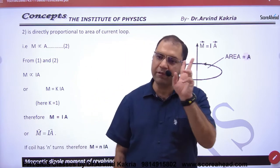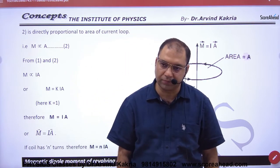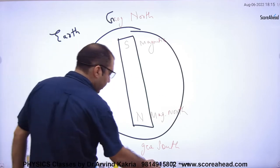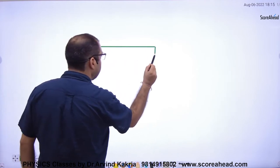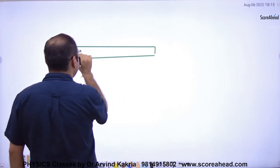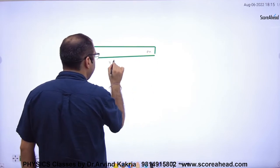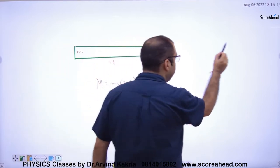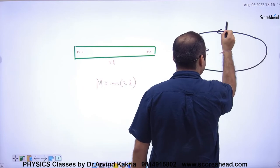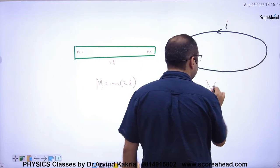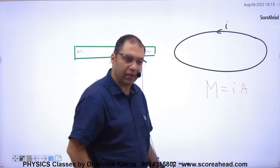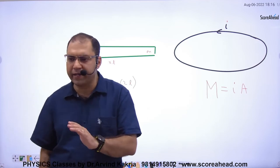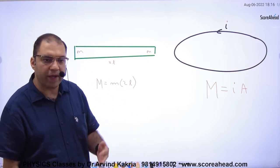There are two types of problems. Either you are given a bar magnet with pole strength small m and length 2L, so capital M equals small m into 2L. Or you are given a current-carrying loop, so capital M equals current I into area A. Both formulas are different, so you must decide: if it is a bar magnet, use the first formula; if it is a current-carrying loop, use the second formula.